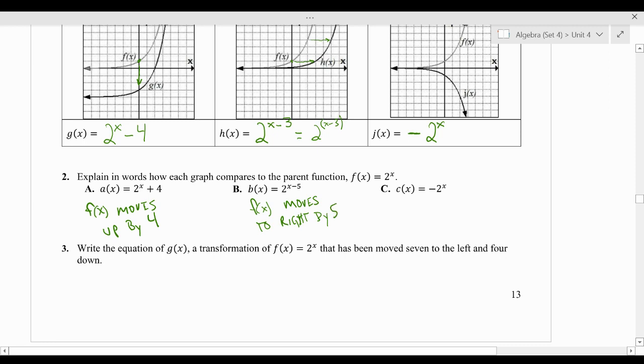Alright, and finally, let's look at c of x. And c of x has negative 2 to the power of x, which simply means that f of x reflects over the x-axis. And a lot of us teachers just say, it flips. Alright, pretty cool. Not too bad.